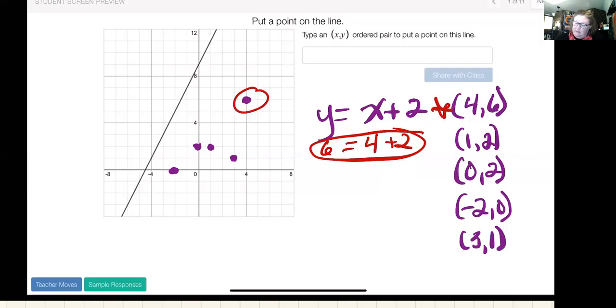My second ordered pair that one of you came up with is one comma two. So I'm going to put the one where the x is, the two where the y is, and see if that works. And that comes out to be two is equal to three. So the ordered pair one comma two does not work.